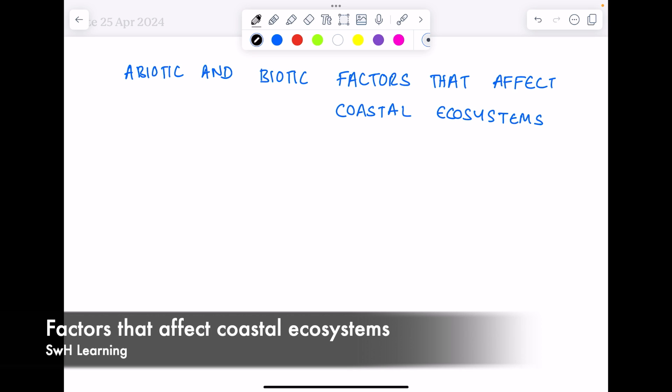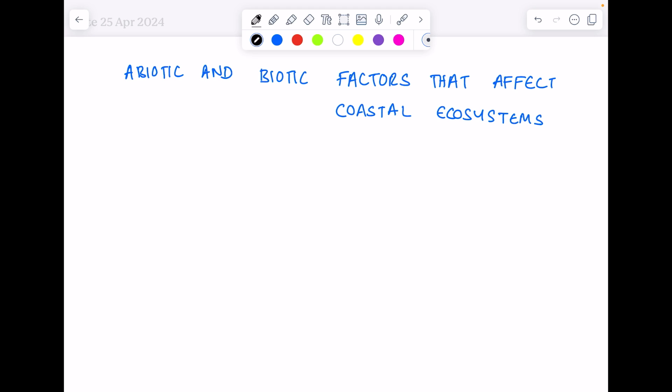Now we're considering abiotic and biotic factors that affect coastal ecosystems. Biotic - remember the word biology, they're tightly linked - means living factors which affect coastal ecosystems, whereas abiotic factors are non-living factors.